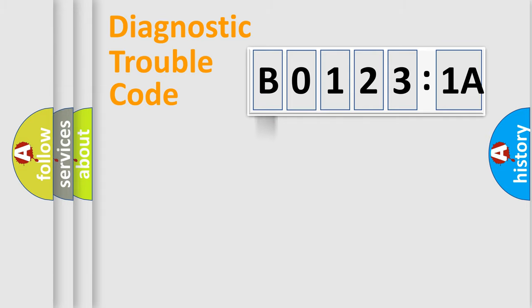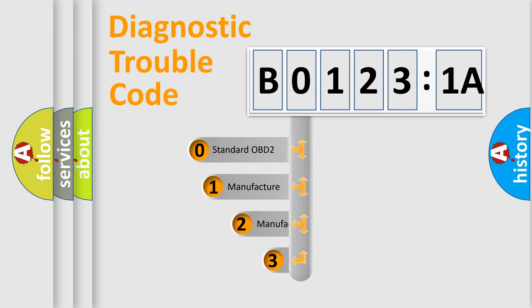Powertrain, Body, Chassis, Network. This distribution is defined in the first character code.